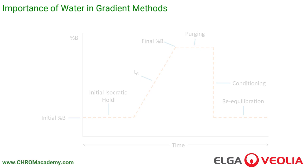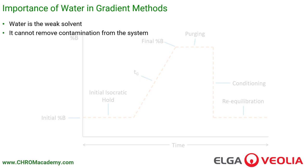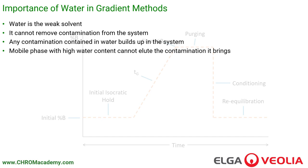When using gradient methods, it's important that we use very good quality water. Water is the weak solvent — it cannot elute substances that have any real degree of retention or affinity for the stationary phase, and it can't remove contamination from the system. Any contamination brought by the water into the system sticks to the column and builds up. The water itself cannot remove that, so the water is effectively contaminating the system because it simply isn't strong enough to remove any contamination that builds up.